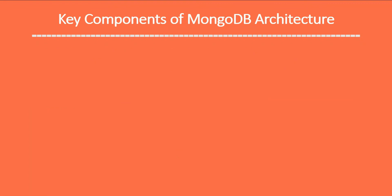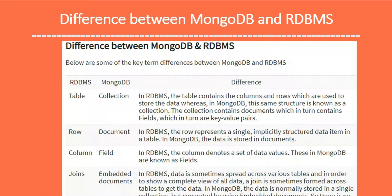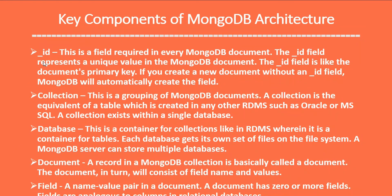Now let's look at some key components of MongoDB architecture: underscore id, collection, database, document, and field. These are the important components to understand when using MongoDB. The underscore id field is required in every MongoDB document — it represents a unique value. If you create a new document without an underscore id field, MongoDB will automatically create one for the document.